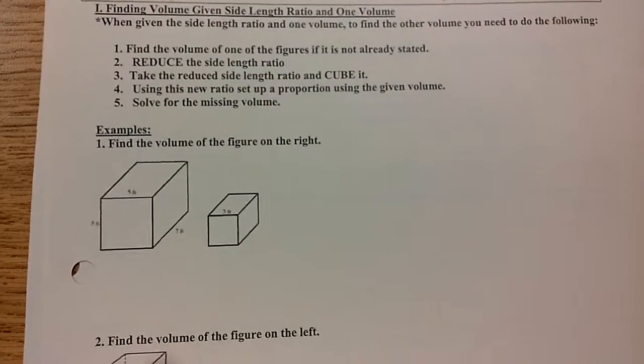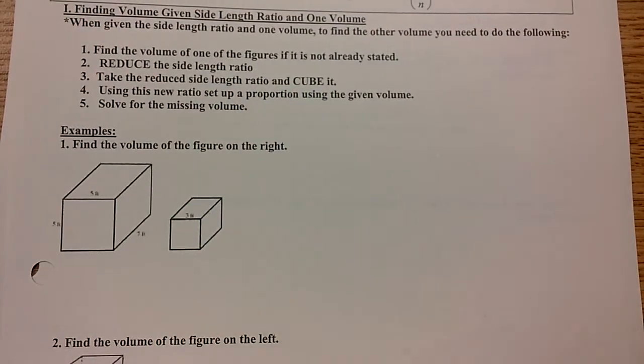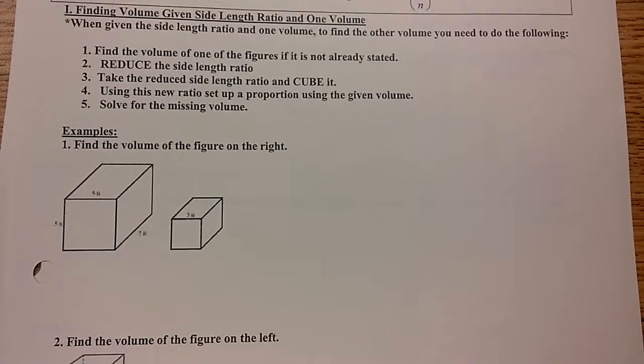So if you are given a side length ratio and you want a volume ratio, you're going to cube it. If you're given a volume ratio and you want to find a side length ratio, you're going to cube root it, the inverse of it.